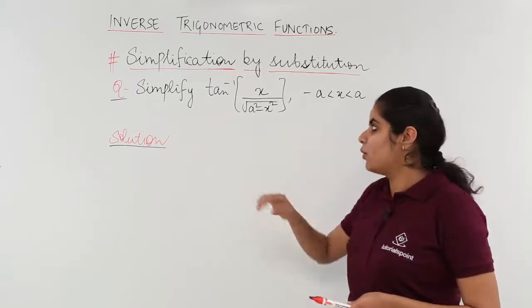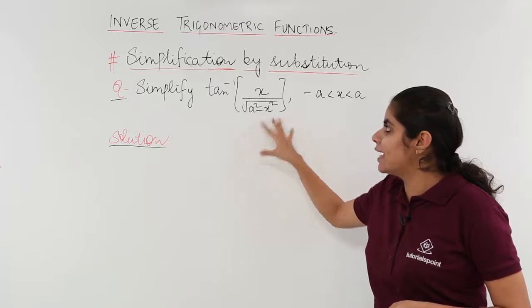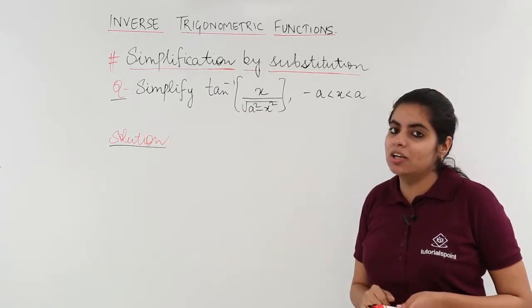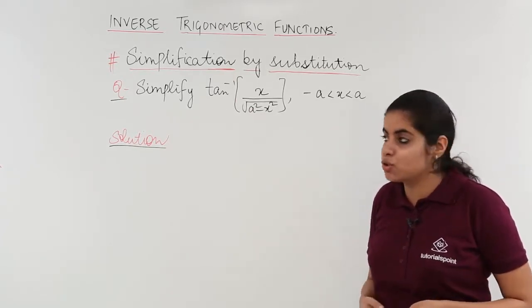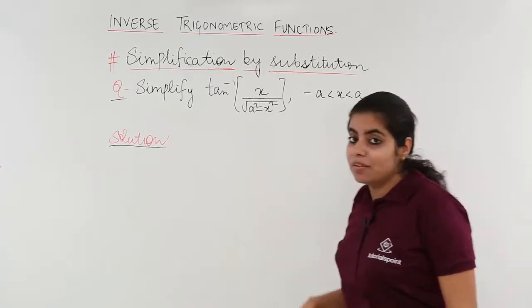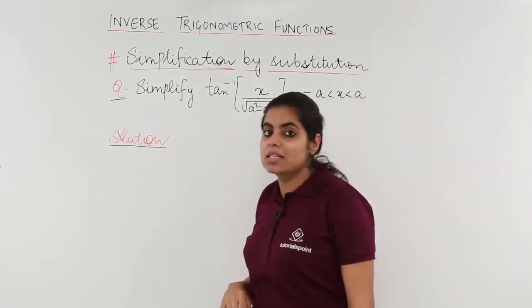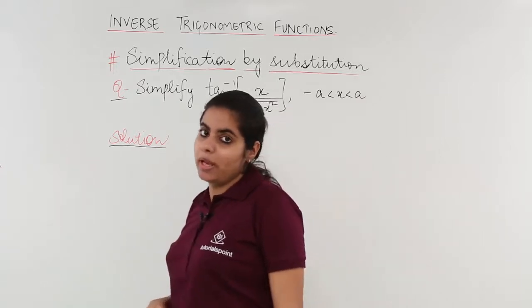Simplify tan inverse of x upon under root of (a squared minus x squared) is given to us, and the range is minus a to a.